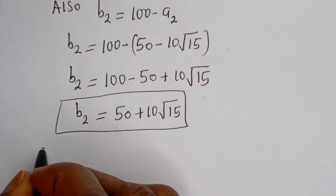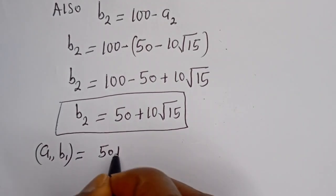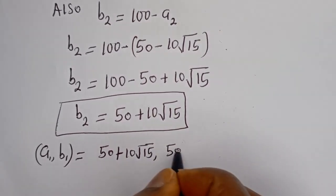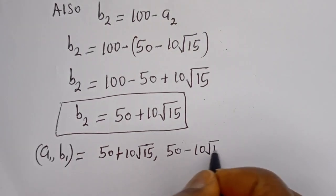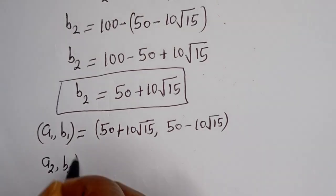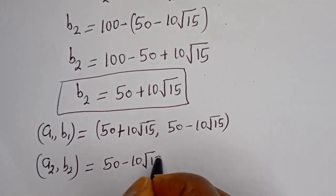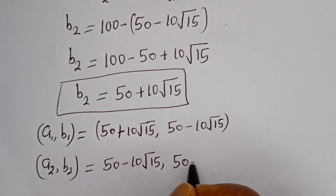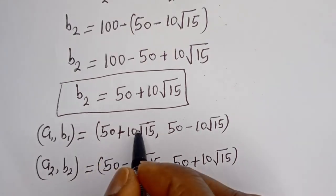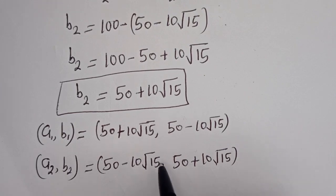Our final answers are: the pair (A1, B1) is equal to (50 plus 10 root 15, 50 minus 10 root 15), and the pair (A2, B2) is equal to (50 minus 10 root 15, 50 plus 10 root 15). We can check to confirm if this answer is correct.